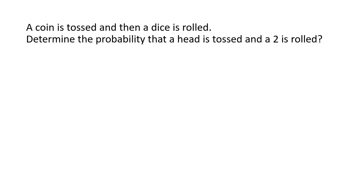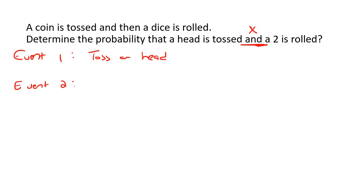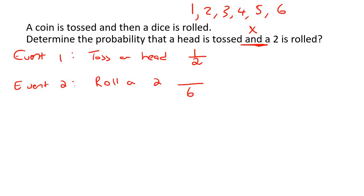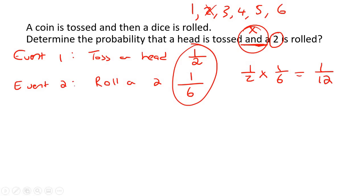A coin is tossed and then a dice is rolled. Determine the probability that a head is tossed and a two is rolled. So we're going to multiply. Event number one — toss a head — that's 1 out of 2. Event number two — roll a two — when you roll a dice there are six options: 1, 2, 3, 4, 5, or 6. There's one two, so that's 1 out of 6. Because they're using 'and', multiply: 1/2 × 1/6 = 1 out of 12.